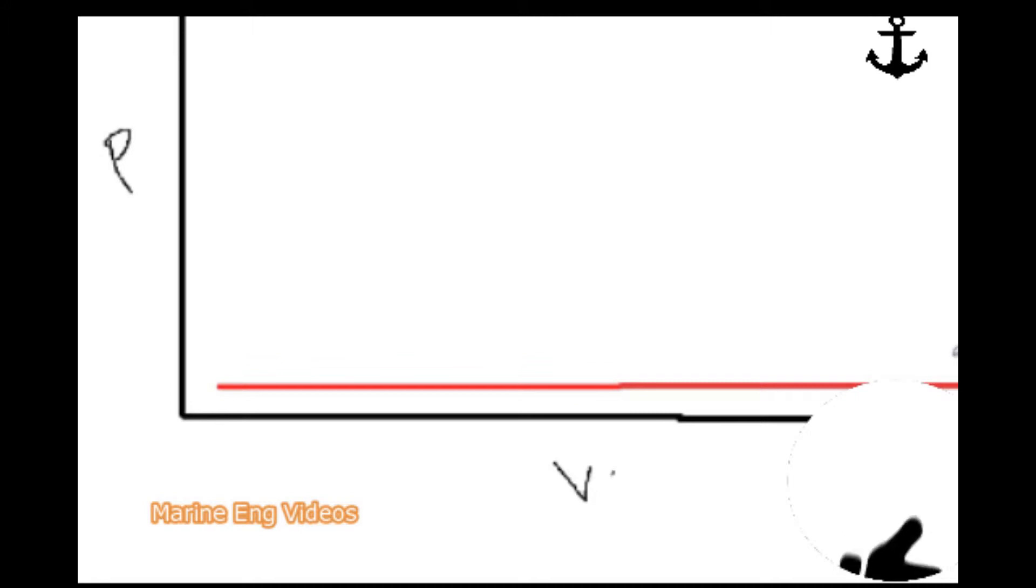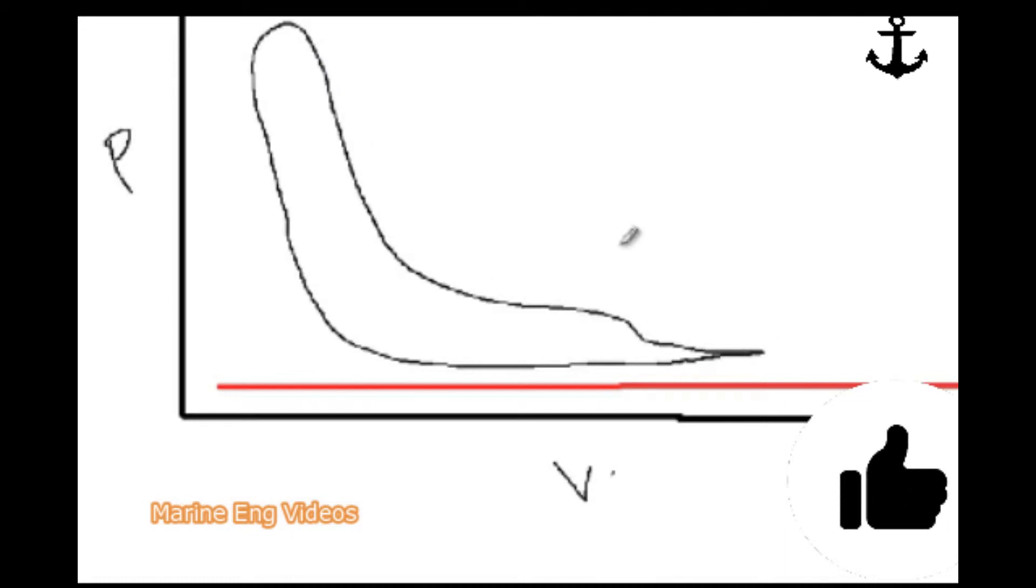Once you do that, the drum automatically starts to rotate and you will get a power card something like this. This line which is at the bottom is the compression curve.